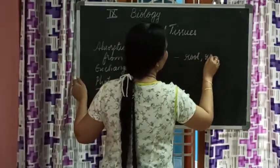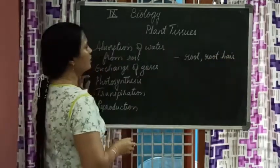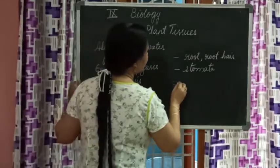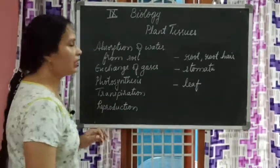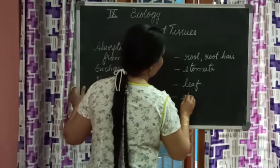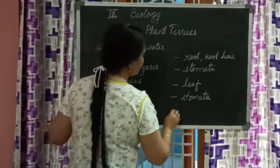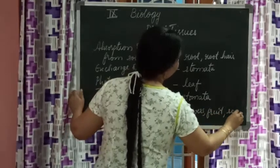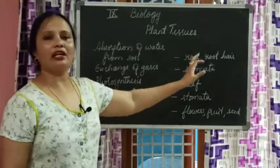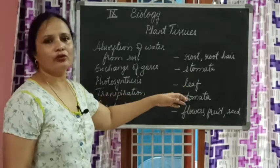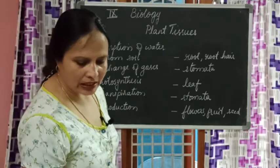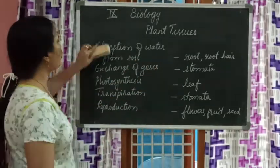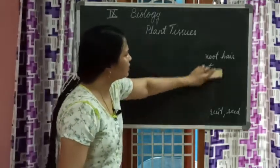Here are the answers: absorption of water from soil is done by roots or root hairs. Exchange of gases is done by stomata, present on the underside of the leaf. Photosynthesis is performed in the leaf, where chlorophyll is most prominent. Transpiration is again done by stomata on the underside of the leaf. Reproduction is through flowers, fruit, and seeds. All these functions are done by different parts of the plant — that is what we are learning in this lesson.